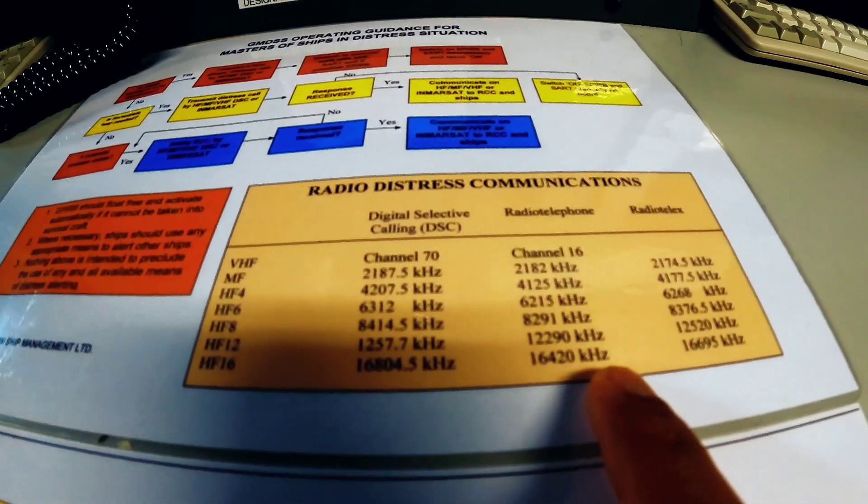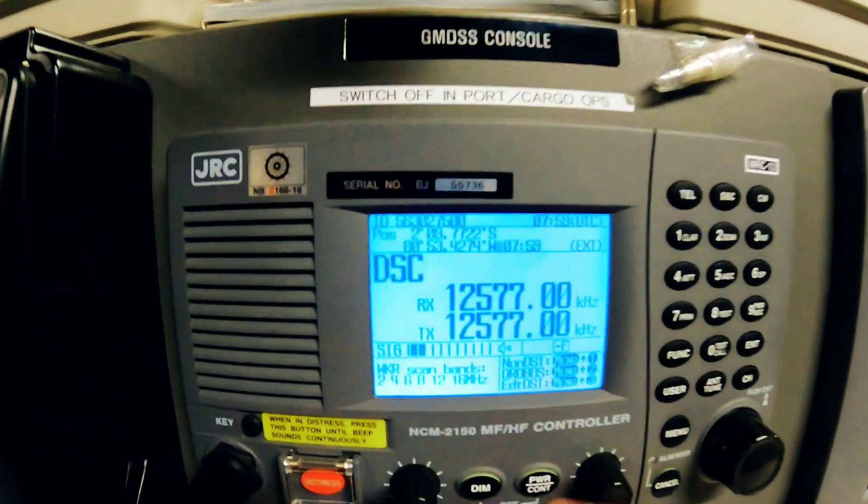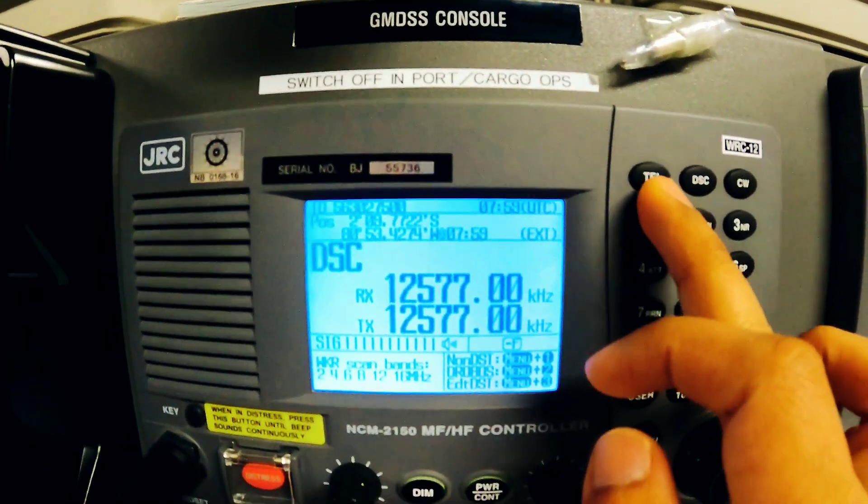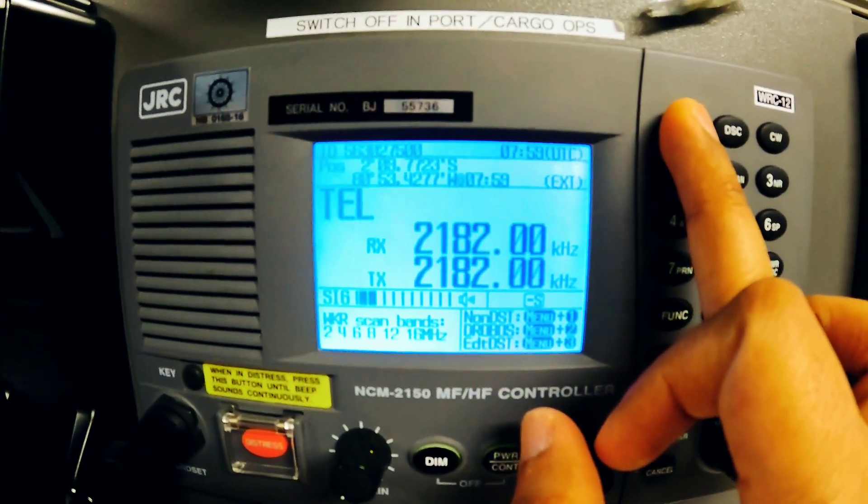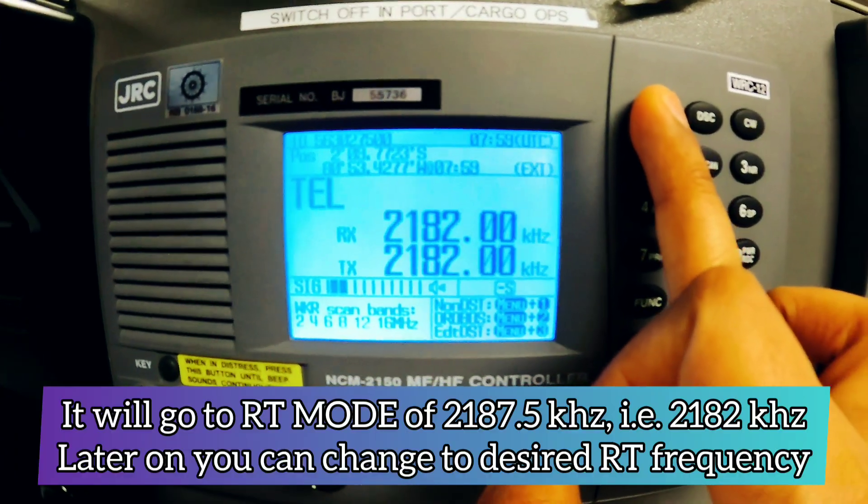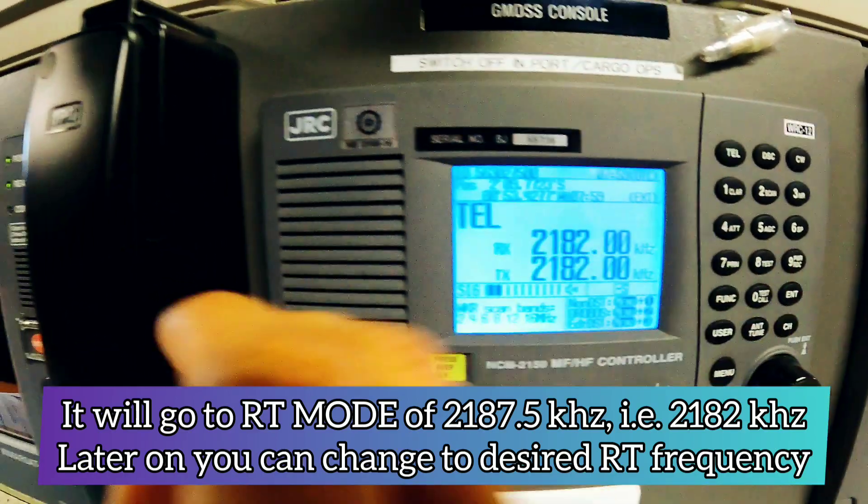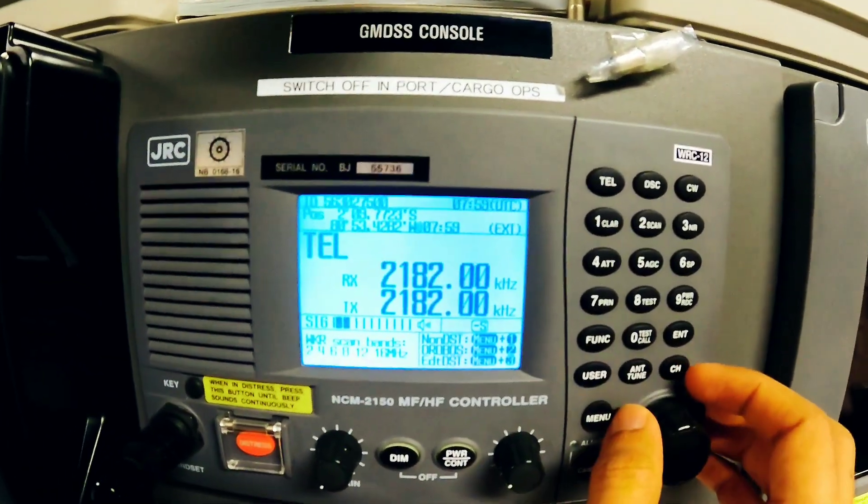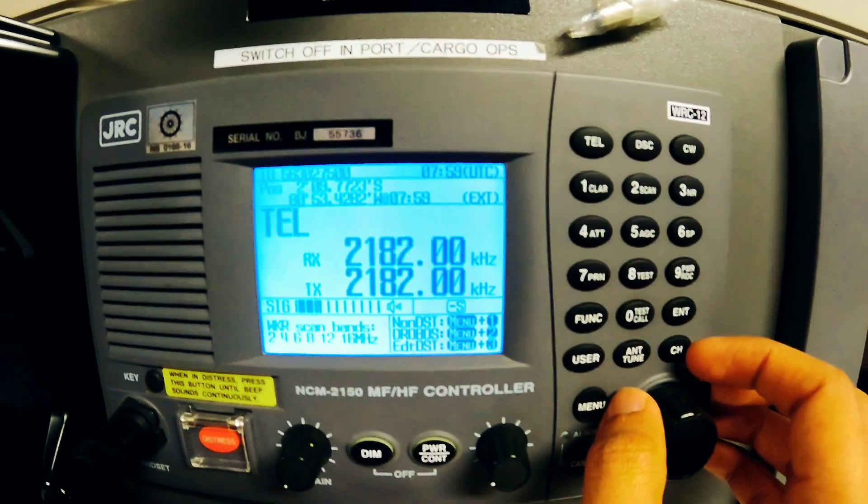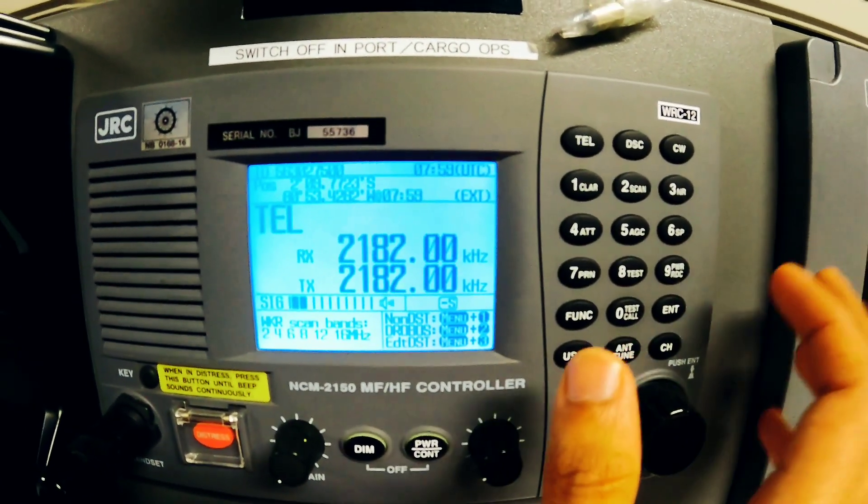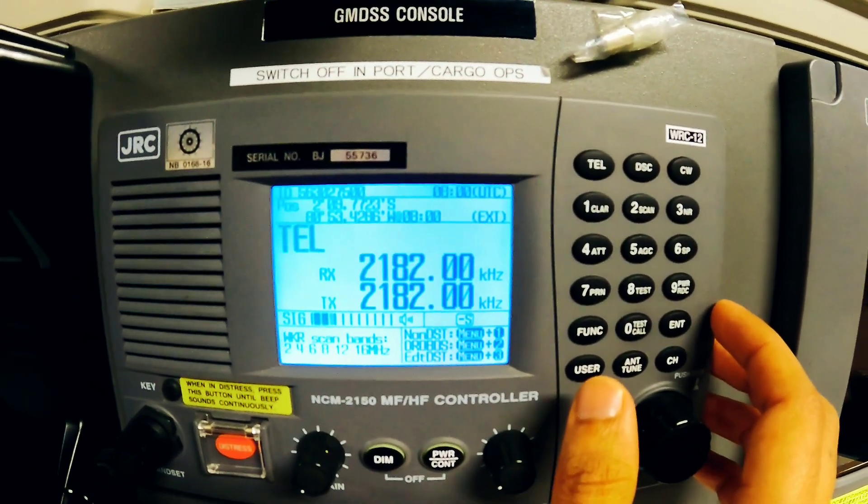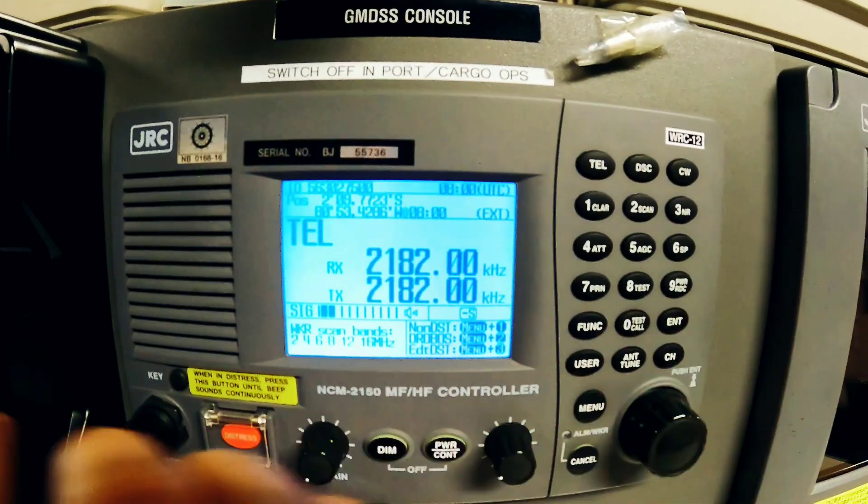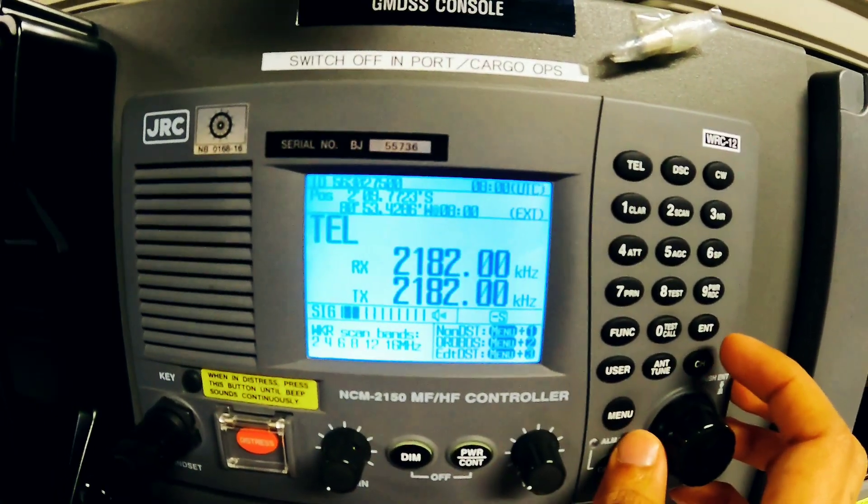For switching on to RT mode, you can see here this TEL button. If I press TEL button, it will go to radio telephone mode. After going into radio telephone mode, you have to hold this handset and speak your message of distress. This is only to be done once the ship has acknowledged or the coast station has acknowledged your DSC alert. Then only you will speak on the radio telephone.